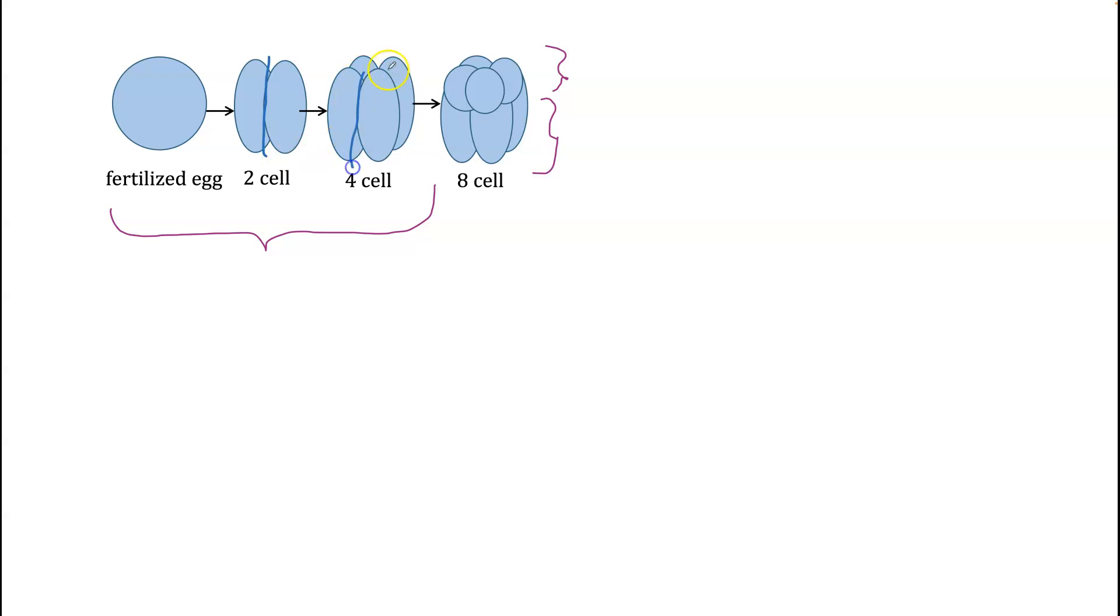However, after that third cell division you can't anymore, and what would the reason be? If you imagine some kind of determinant that's present in the top part—say this is the dorsal side of the embryo—the first cell division, both cells have it. The second cell division, both cells have it, plus they have whatever is elsewhere in the cells.